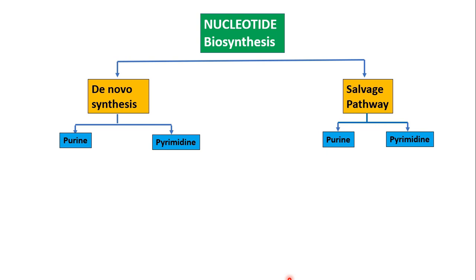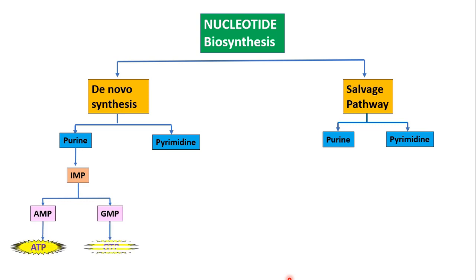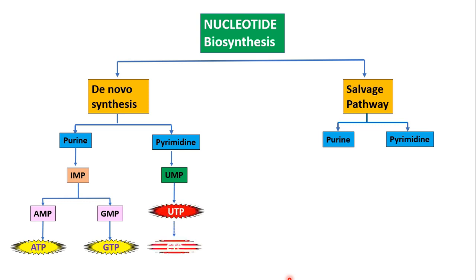The first parent nucleotide formed is inosine monophosphate (IMP). From IMP, AMP and GMP are formed. AMP — adenosine monophosphate — then forms ATP, and GMP forms GTP with the addition of phosphate. For pyrimidines, UMP is formed, from which UTP and CTP are derived. UMP — uridine monophosphate — also forms deoxy-UMP and deoxy-TTP.